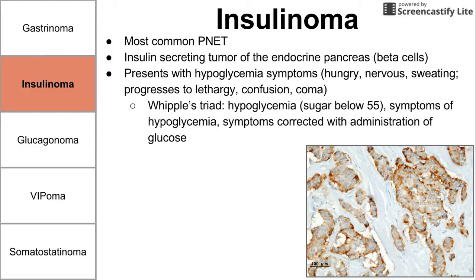To confirm hypoglycemia from insulinoma, you can refer to Whipple's triad — three criteria you must meet. First, you have hypoglycemia confirmed by blood test, with blood sugar below 55. Second, you have symptoms of hypoglycemia such as hunger, nervousness, sweating, progressing to lethargy, confusion, and coma. Third, these symptoms should correct with administration of glucose. Meeting all three criteria confirms Whipple's triad, indicating hypoglycemia in this case as a result of insulinoma.